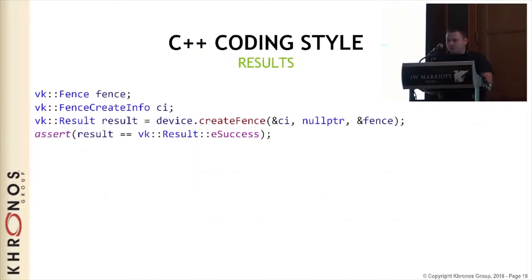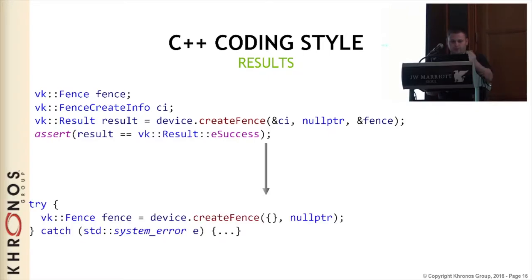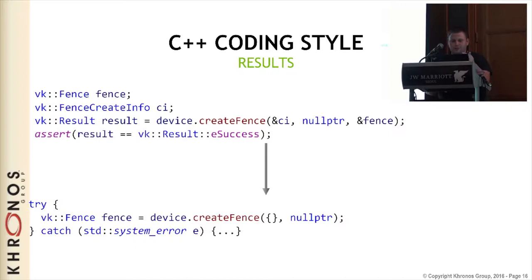So how does the code look after all those transformations? Before, you had to create your create-info, and then call create fence with that information and assert there was no error. In C++ it's now a single line of code - you just say create fence, the braces are for empty flags, and now a null pointer for the allocator. You wrap it in try-catch for error handling. It's really a single line of code compared to four lines before.